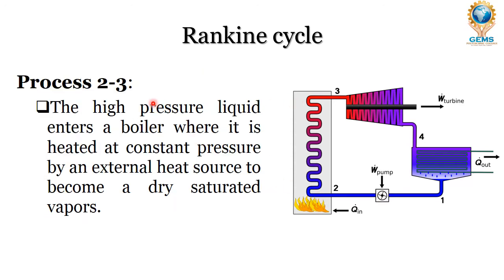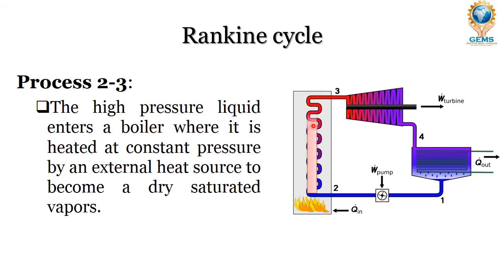In process 2 to 3, the high pressure liquid enters the boiler where it is heated at constant pressure by an external heat source to become a dry saturated vapor. It is from the boiler inlet to the boiler outlet where the fluid absorbs heat from the flue gases so that the liquid is converted into vapor form.